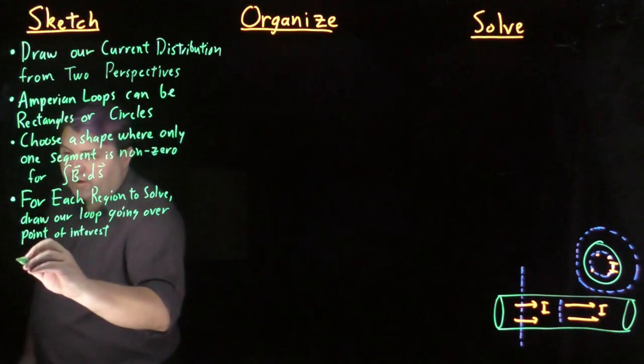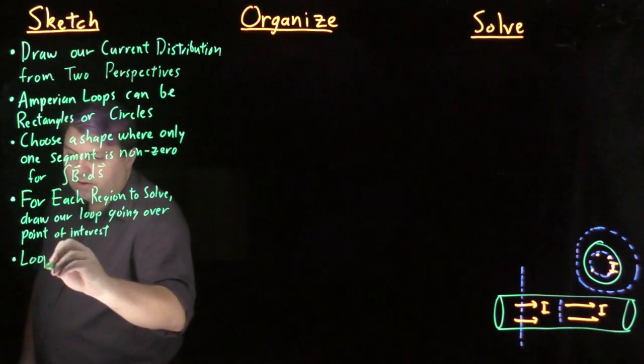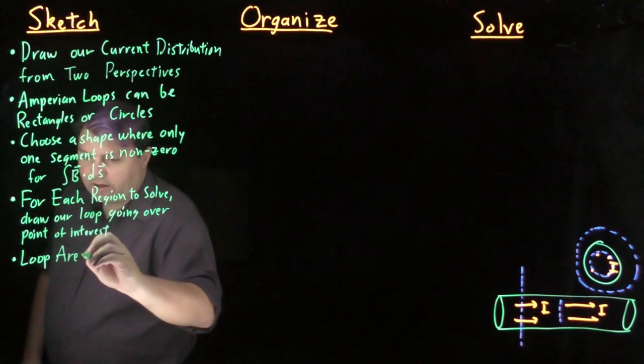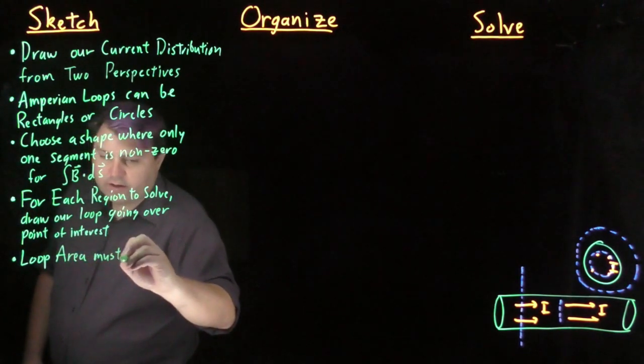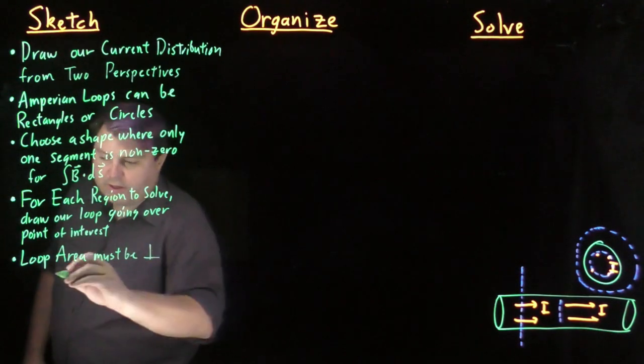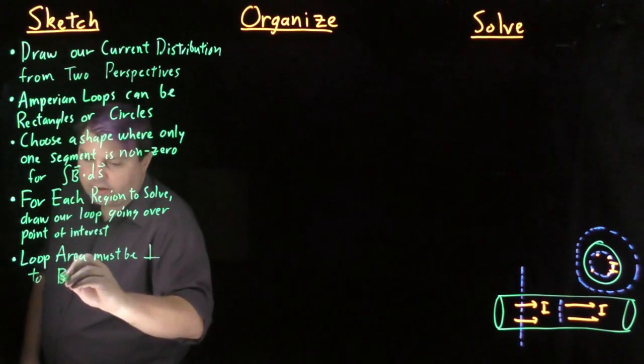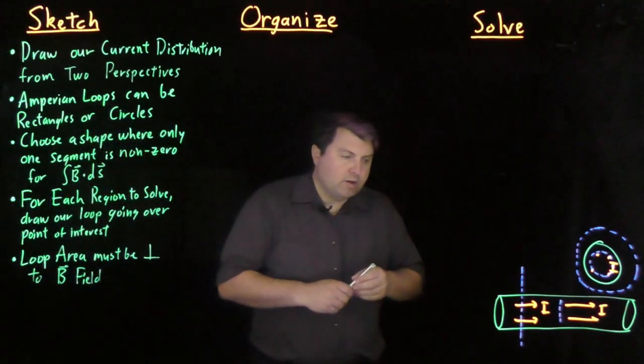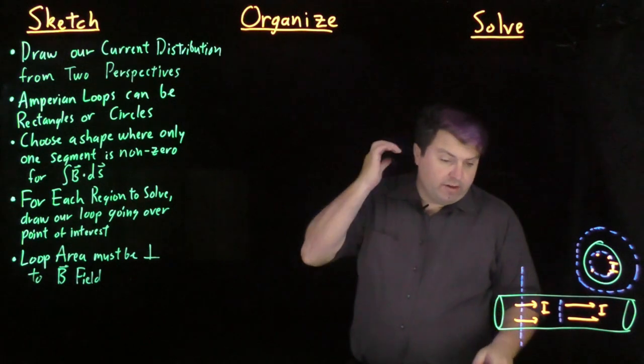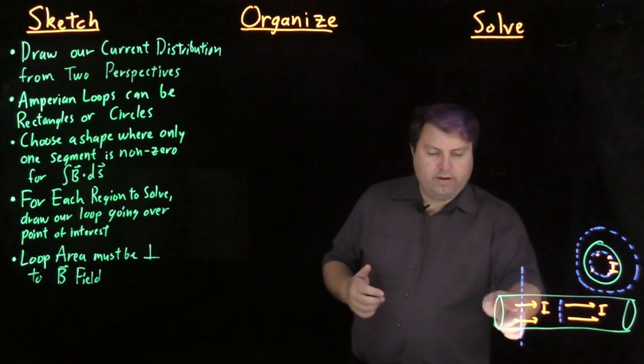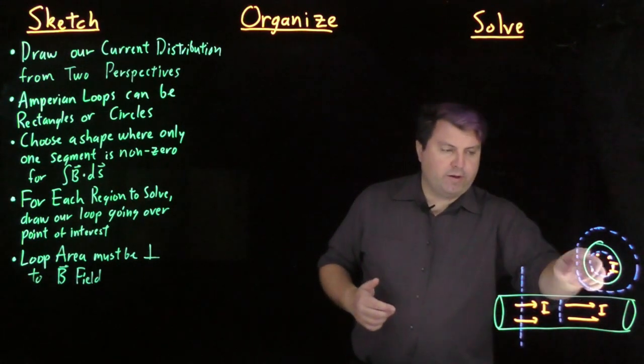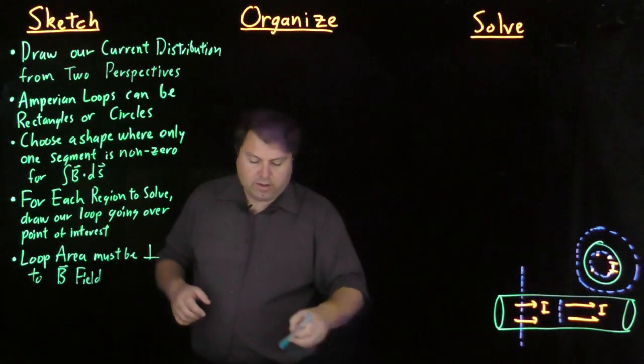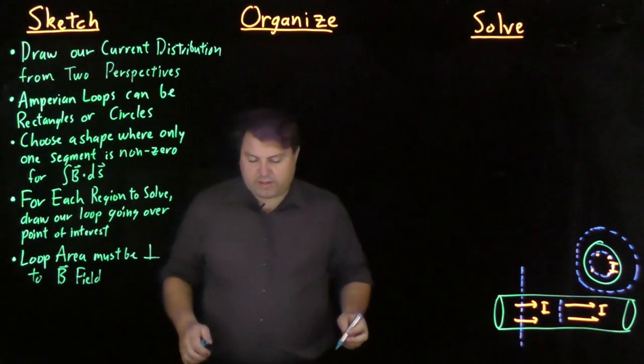So what we want is we want our loop area to be perpendicular to the magnetic field. We can see that through here, that my loop area is perpendicular to the field. My loop area is in here. The magnetic field is like this. So everything is good. Everyone is happy so far.